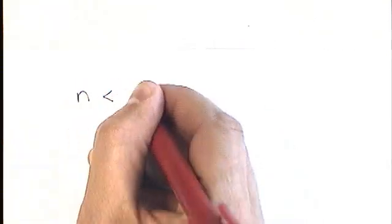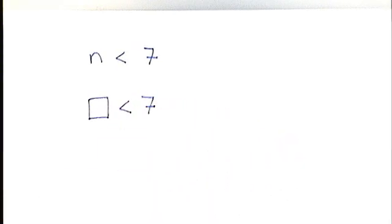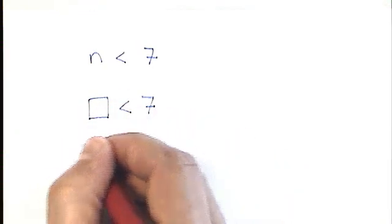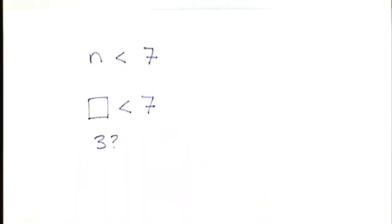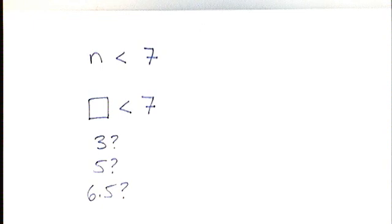Often questions will ask you to suggest a possible value. Imagine you see this: N is less than 8. That N stands for a number. What number could you put in its place? Quite often it's useful to put a box instead of an N. What numbers could you put into that box? Could you put a 3 in that box? Could you put a 5? Could you put a 6.5? In fact, you could put any number in that box which is less than 8.